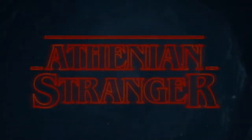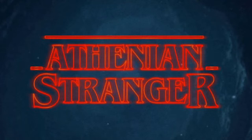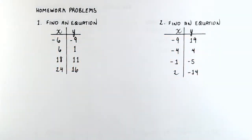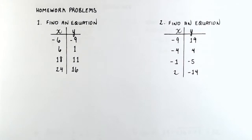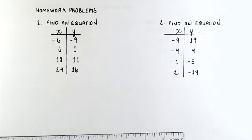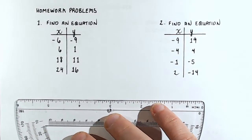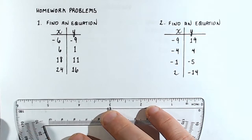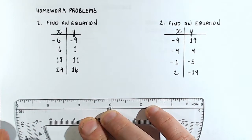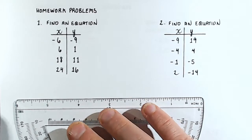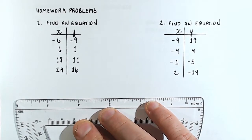Alright ladies and gentlemen, welcome back to this Athenian Stranger tutorial video where today we're going to look at the homework problems for Unit 2, Lesson 8. This is the unit on finding the equation of a line from tables and descriptions, and the assumption is that you have already watched the video, done the lesson, and already completed this homework. The goal here is not to give you all the answers so you get 100. The goal is to explain how to do these problems so you don't get mired in a small misunderstanding and have that interrupt your whole progress through the homework.